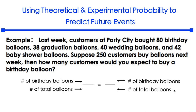In the first part of the problem, you are given a variety of balloons. 80 plus 38 plus 40 plus 42 gives us a total of 200 balloons. Now, out of those 200 balloons, we want to identify how many are birthday balloons — that would be 80. Our question says there will be 250 customers coming into the store to buy balloons, so the 250 customers will represent our total.